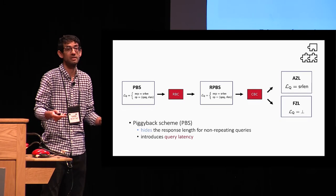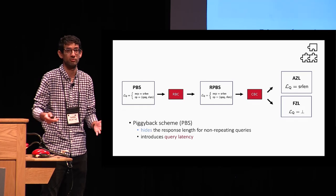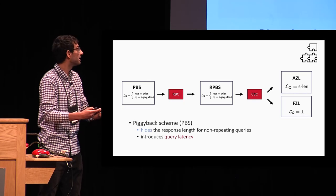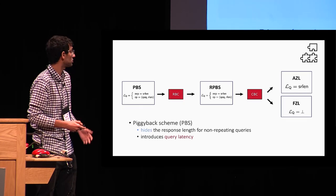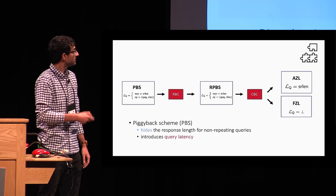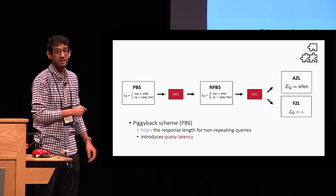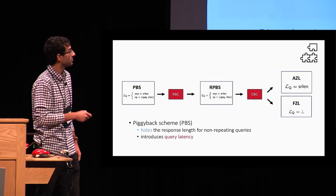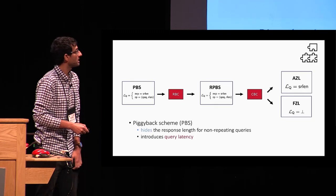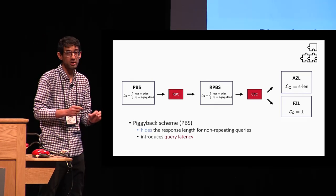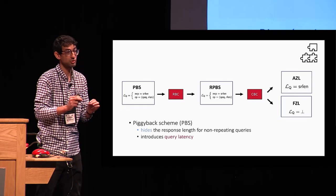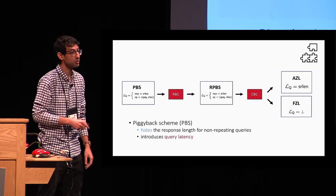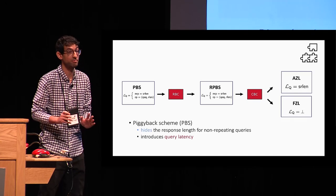Hiding the response length is not trivial using ORAM simulation without padding. This construction can be of independent interest, especially in the context of recent attacks on volume using the volume pattern. However, it does introduce a new trade-off: query latency. When we use PBS at the beginning of our pipeline, we get two possible constructions at the end. The first, AZL, has a query leakage equal to the sequence response length — a very small amount of leakage. The second, FZL, doesn't leak anything, but doesn't achieve perfect correctness.